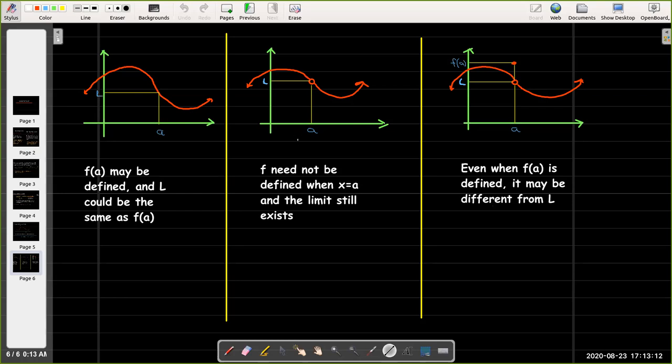It could be that the function is not defined when x equals a. There's a hole in the graph, but the y coordinate of the hole is our limit value. And so the limit still exists.